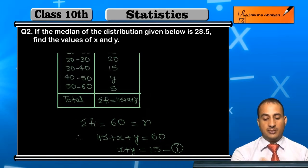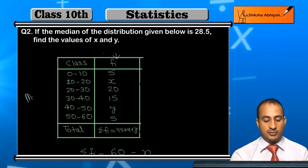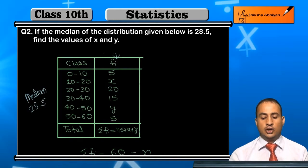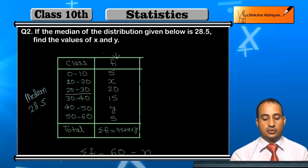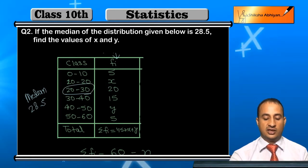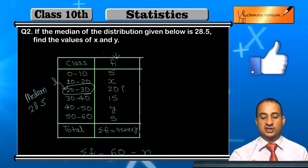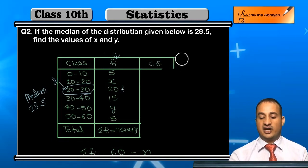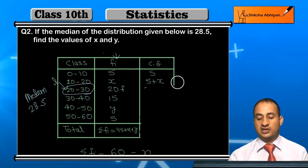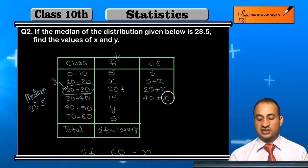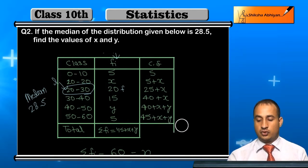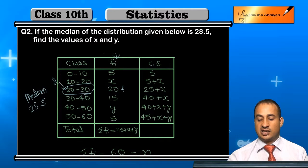Now, the median given is 28.5. This median lies in the class 20-30, so that becomes our median class. I also calculate the cumulative frequencies: 5, then 5+x, then 25+x, then 40+x, then 40+x+y, then 45+x+y. The cumulative frequency of the class lower than the median class is 5+x.